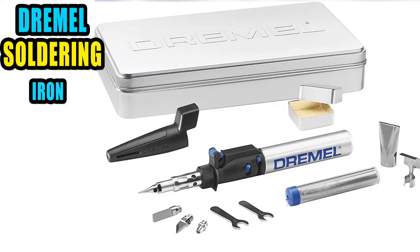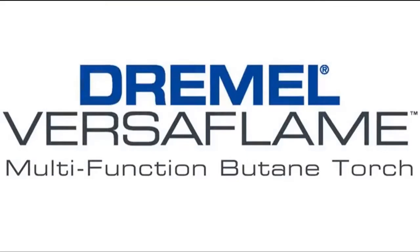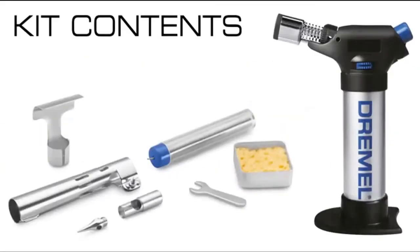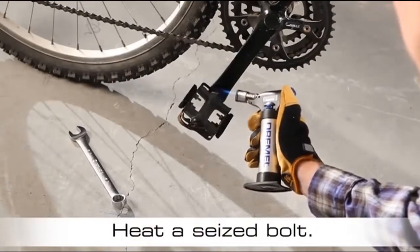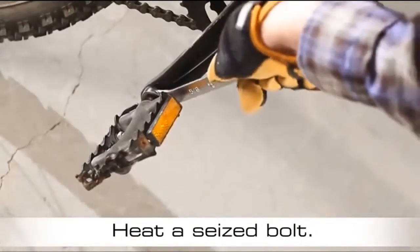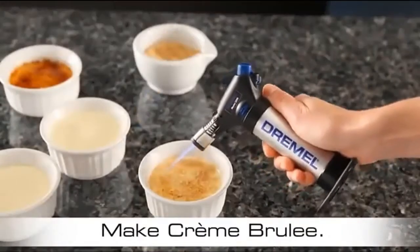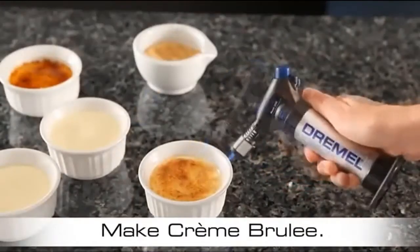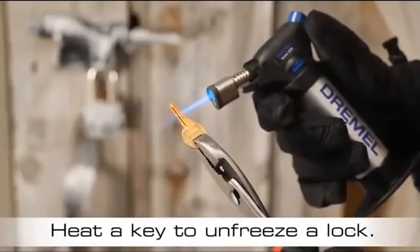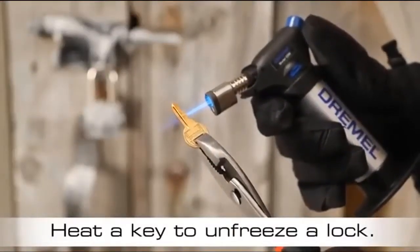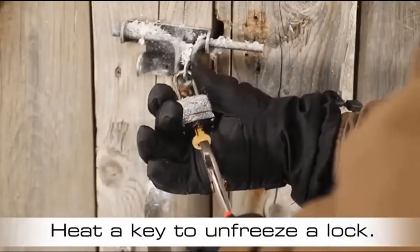At number two we have the Dremel 2001 Versatip butane soldering torch. The number one name in hobby tools enters our list with this 14-piece precision butane soldering torch kit. This iron can perform a wide variety of functions including burning, cutting, heating, shrinking and welding. Highly accurate, this tool is perfect for detail and hobby work with the added bonus of being portable.